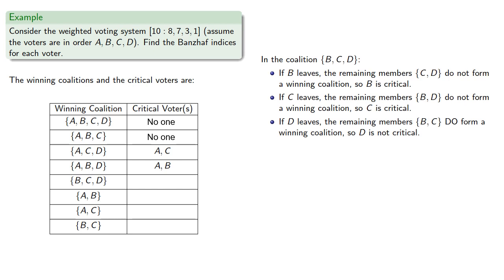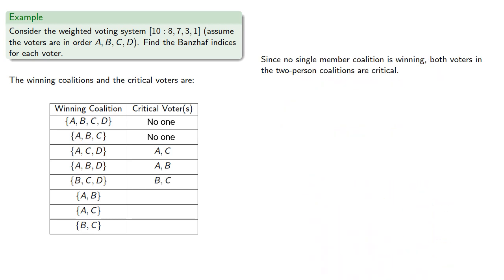For B, C, and D, the critical voters are A and C. And since no single member coalition is winning, then both voters in all of the two-person coalitions are critical.